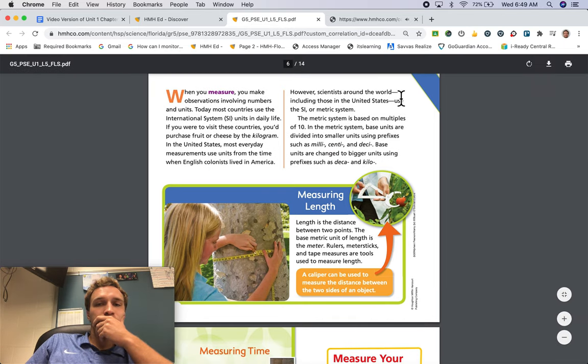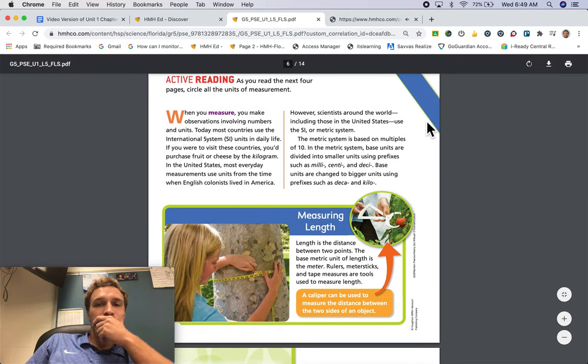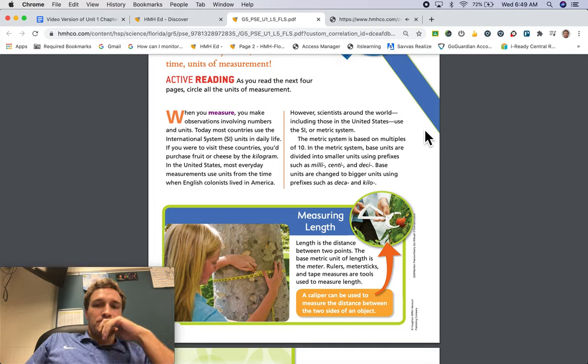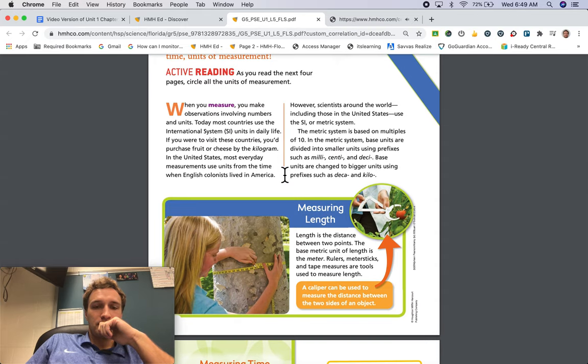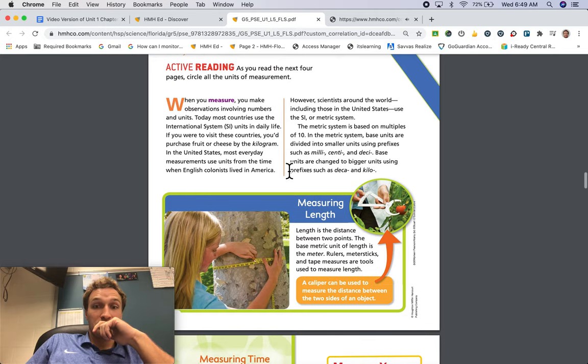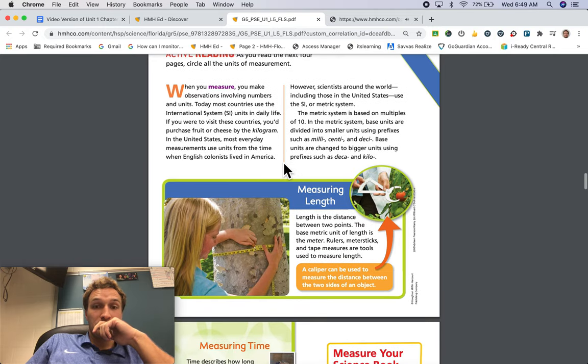However, scientists around the world, including those in the United States, use the SI, or metric system. The metric system is based on multiples of 10. In the metric system, base units are divided into smaller units using prefixes such as milli, centi, and deci. Base units are changed to bigger units using prefixes such as decca and kilo.